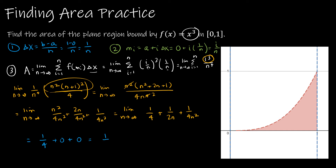So my area is 1/4. And again, if I had used the other side — the left-hand side — I would have gotten the same result. Just to point out: I got to stop writing the summation once I replaced i with the summation formula, and I get to stop writing the limit when I'm actually finding the limit.